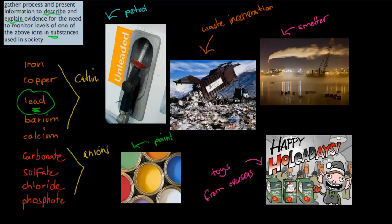Because the dot point says: gather, process, and present information from secondary sources to describe and explain evidence for the need to monitor levels of one of the above ions in substances used in society. I have attached two websites in the descriptions below that you should look through — they give more information about the potential consequences of lead poisoning and where lead poisoning comes from.